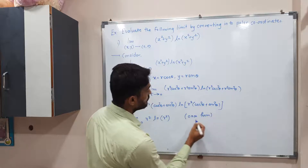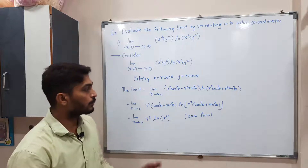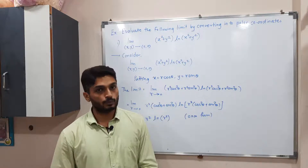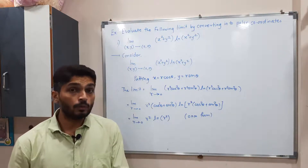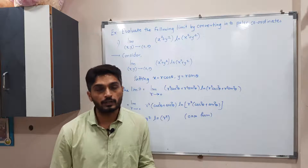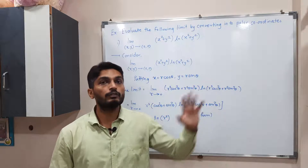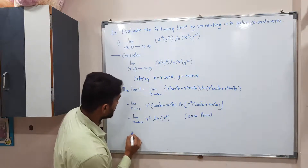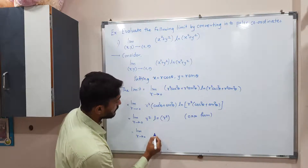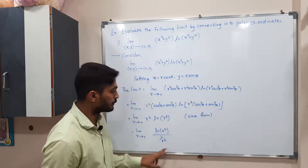Since we have a 0 × ∞ form, we cannot apply the limit directly. We need to use a technique. We already studied L'Hôpital's rule, which is applicable only for the 0/0 or ∞/∞ forms. So we need to convert our expression into one of those forms. We rewrite it as limit r tends to zero: ln(r²) divided by (1/r²).